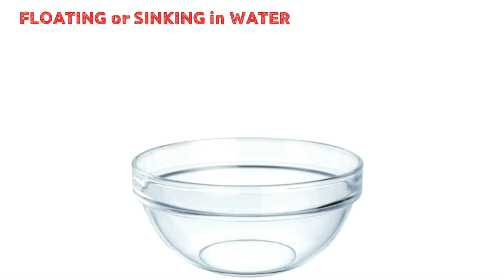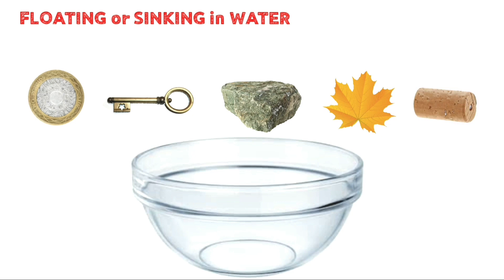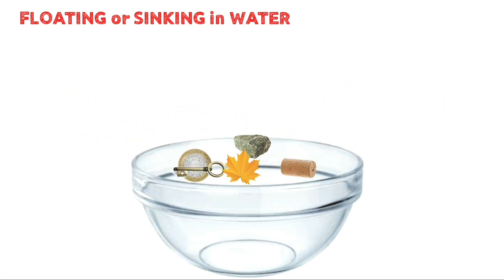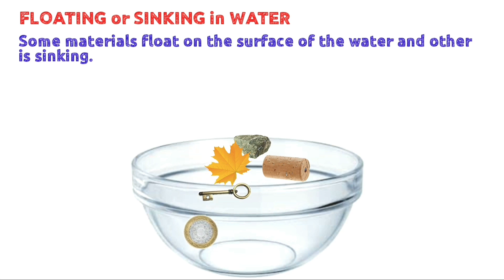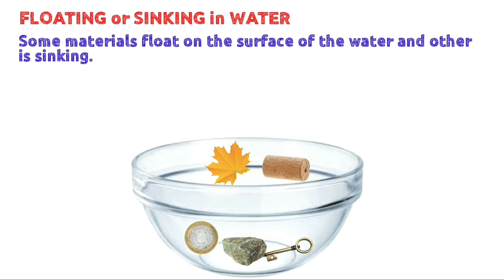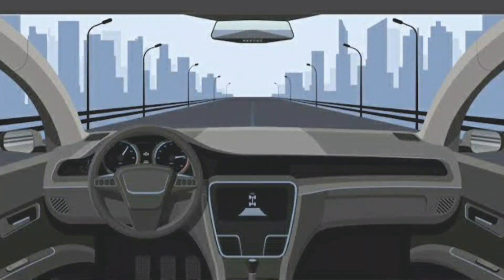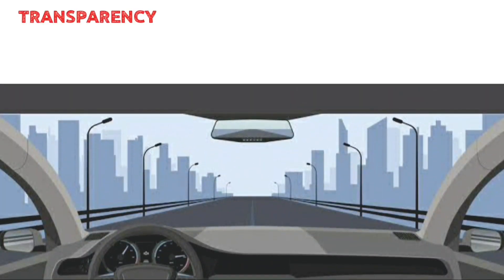The next property is floating or sinking in water. Take some materials like a coin, key, stone, dried leaf, and a piece of cork, and drop them in a tumbler of water. Some materials like dried leaf and cork float on the surface, while others like coin, key, and stone sink in water.